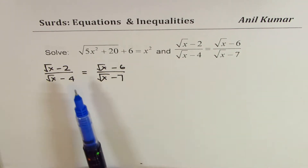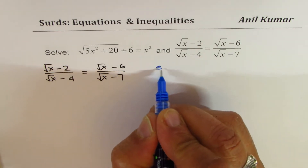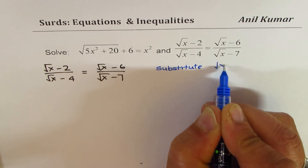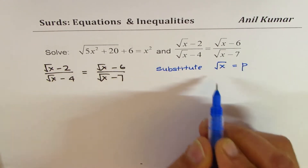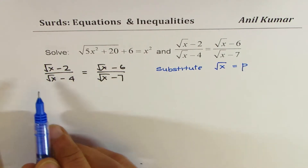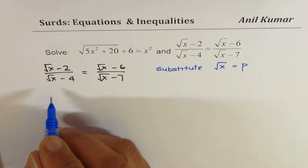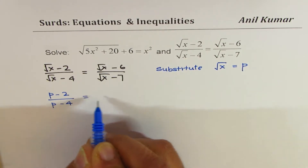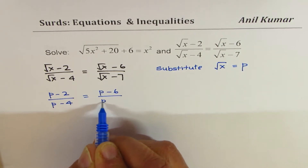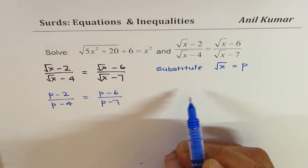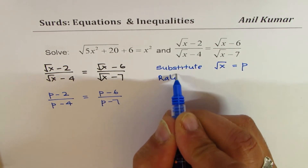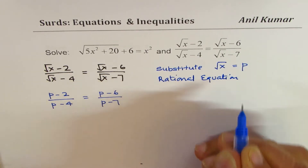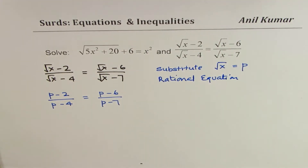If I make a substitution — let's substitute √x = p — the equation becomes (p − 2) / (p − 4) = (p − 6) / (p − 7). So it gets transformed to a rational equation, which is much simpler to solve.